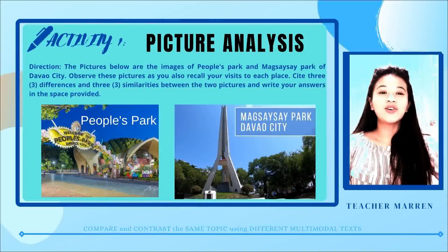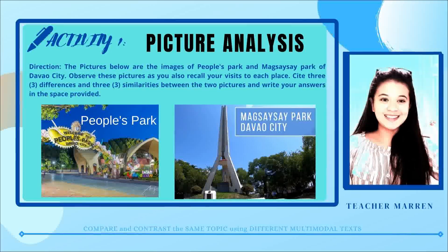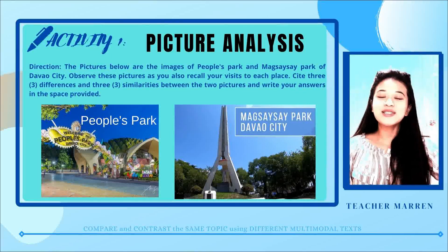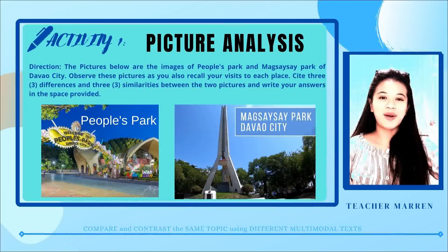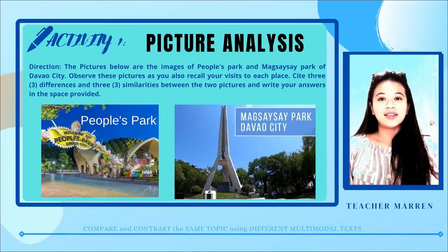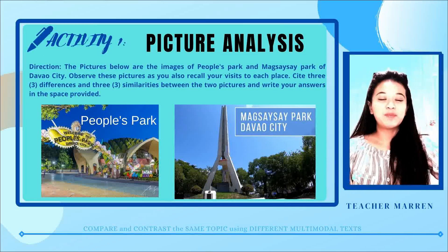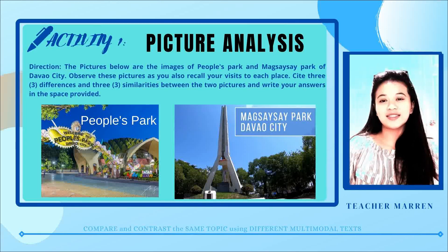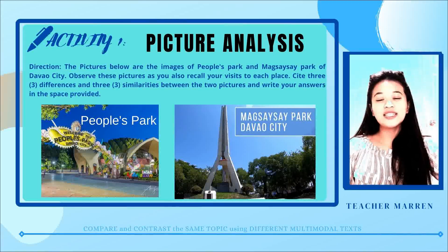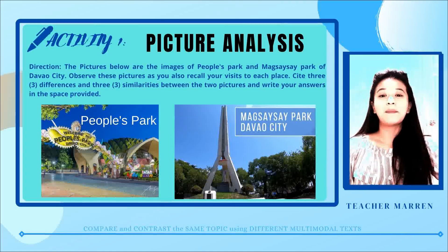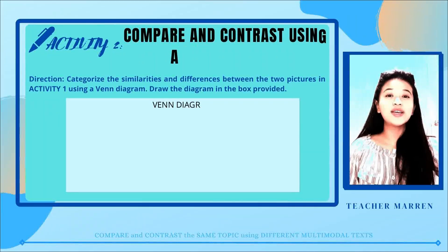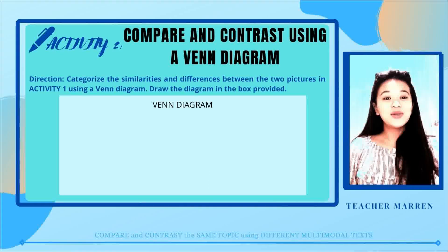For the first activity, you are going to do a picture analysis. Have you been to Magsaysay Park and People's Park? The pictures below are images of People's Park and Magsaysay Park of Davao City. Observe these two pictures, recall your experiences and visits, then cite three differences and three similarities between the two parks. Write your answers on the space provided in your worksheets.